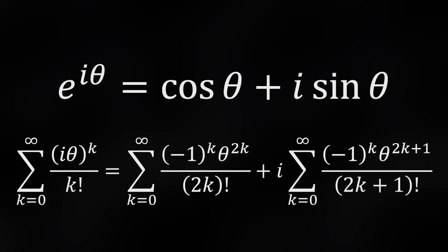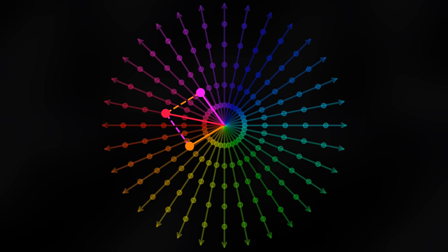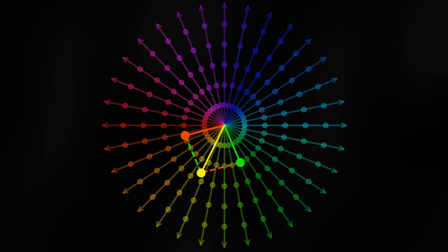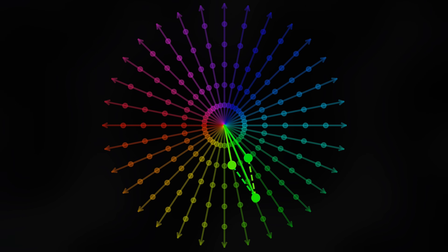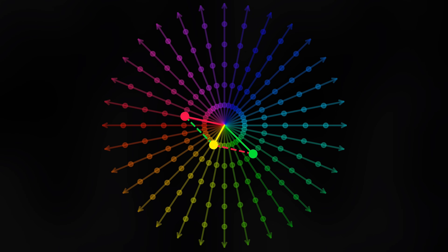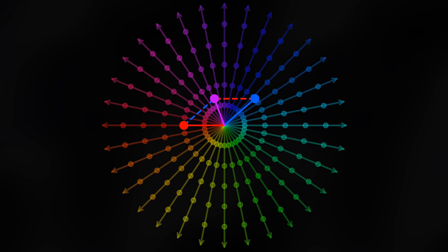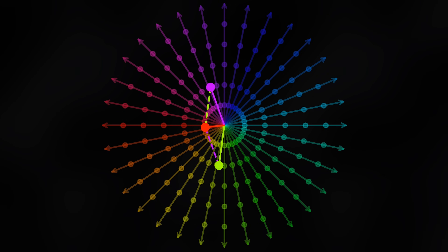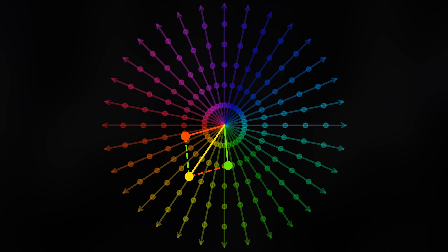For complex addition, we can add any two complex numbers just like vectors — tip to tail, or equivalently the diagonal of the parallelogram they form. Here I'm showing two complex numbers both with magnitude 2 swinging around in the complex plane. Their sum has magnitude anywhere from 0 to 4 depending on their relative phases.